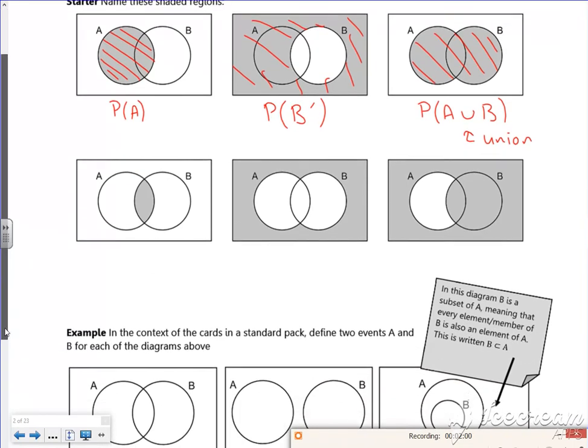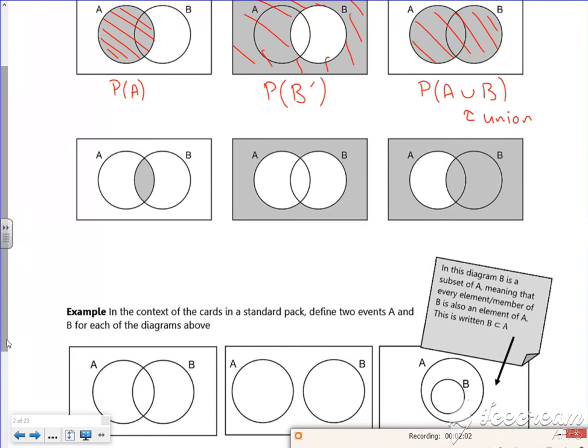The next one, this is A and B, so this is the overlapping bit. A and B, and that there is the intersect.